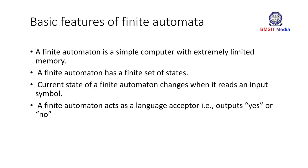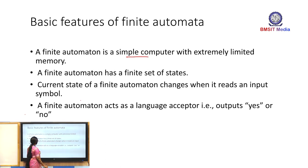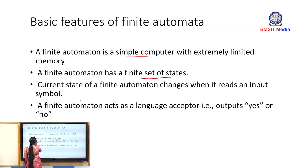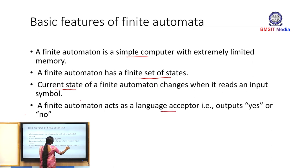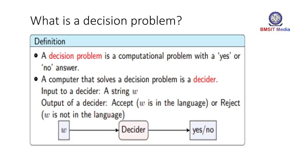Now let's see the basic features of finite automata. First, a finite automata is a simple computer with limited memory. Second, it has a finite set of states. Third, the current state changes when it reads an input symbol. Lastly, it acts as a language acceptor — the output is either yes or no, meaning it can either accept or reject a string.